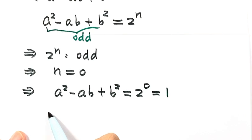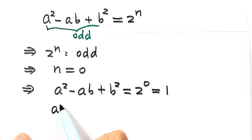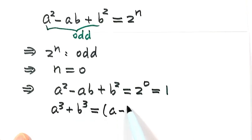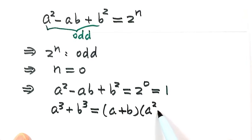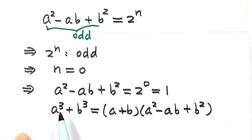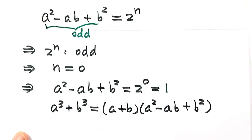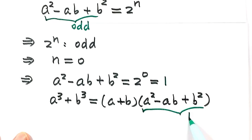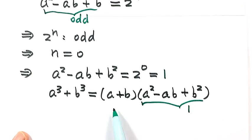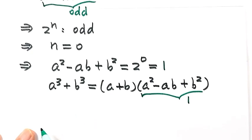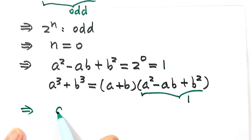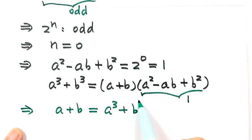Now going back to the left hand side of the given condition, A cubed plus B cubed equals (A + B)(A² − AB + B²). Since A² − AB + B² equals 1, this factor equals 1, and so A + B equals A cubed plus B cubed.